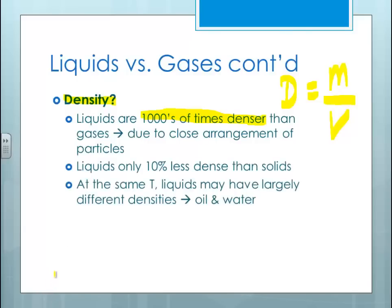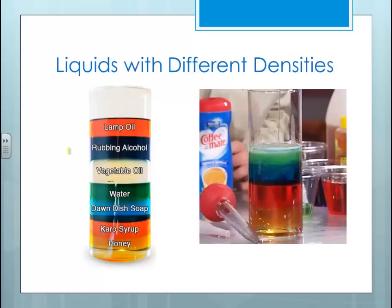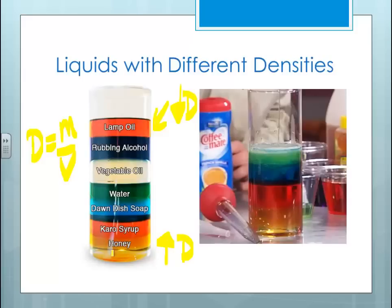Liquids are only about 10% less dense than solids. At the same temperature, different liquids may still have largely different densities. One of the best examples is oil and water — if you pull out the Italian dressing from the fridge, you will see the separation. Even though all of these things are liquids, the ones at the bottom have the highest density — more matter per volume — whereas the ones up top have lesser density and rise to the top. So you can have a lot of variability among densities even within liquids.